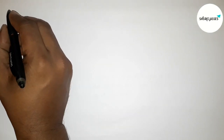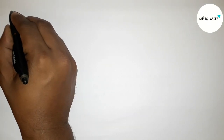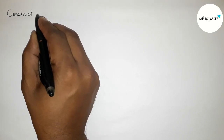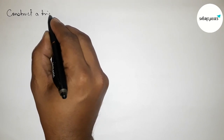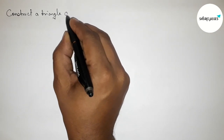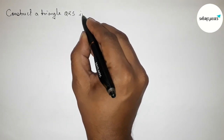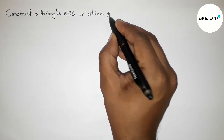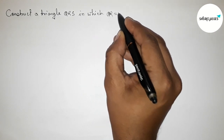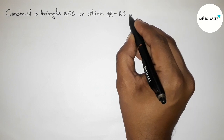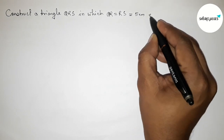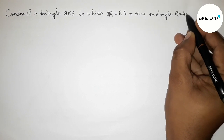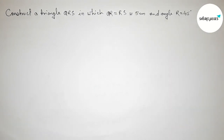Hi everyone, welcome to SI Share Classes. Today in this video we have to construct a triangle QRS in which QR equals RS equals 5 centimeters and angle R equals 45 degrees. Please watch the video till the end. Let's start.